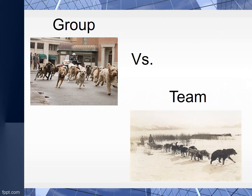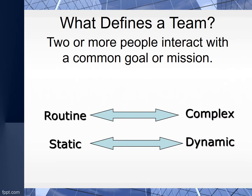Looking at this slide, how do these photos help you visualize some of the differences between a group versus a team? What defines a team? A team is defined as two or more people interacting with a common goal or mission. While a simple definition, there are different types of teams: work or service teams, project teams, or network teams.